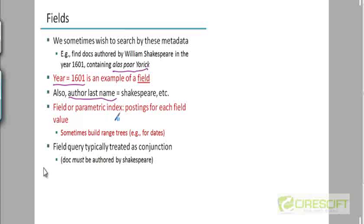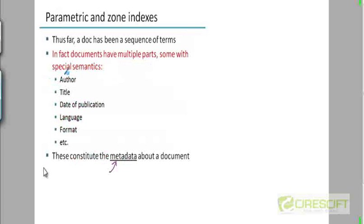In a parametric index or field index, you would have postings for each field value. So there would be a parametric index for the author field, another for the title field, another for the date of publication field, and so on. And of course, there would be a standard index for the body, built on the text contained in the body of the documents.